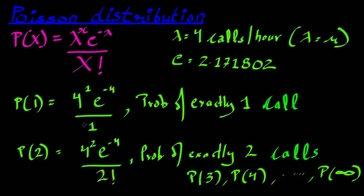So what is the probability of getting exactly one call in the time period? So we replace the x by one and put that into the formula of Poisson distribution. Similarly, what is the probability of getting exactly two calls? This value over here.